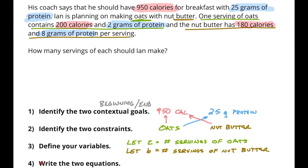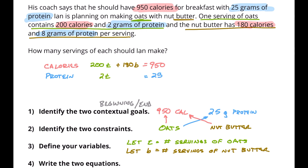Now that we've got all of this sorted out, we're going to write the two equations. I'm going to make my calories a red equation and my protein a blue equation. Starting with calories: oats has 200 calories, so that's 200T, and nut butter has 180 calories, so plus 180B, and that has to equal 950. For protein: oats has 2 grams of protein, so 2T, and nut butter has 8 grams of protein, so plus 8B, and that equals 25. Those are our two equations.